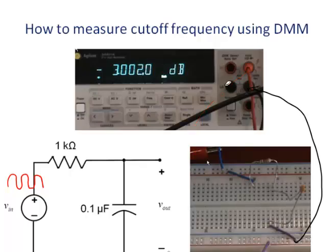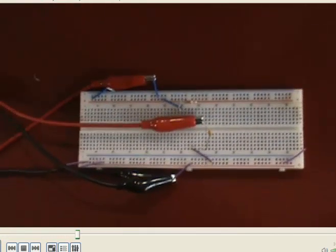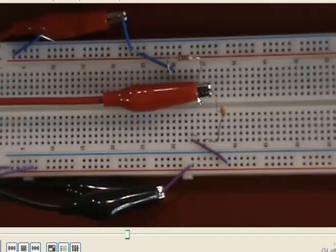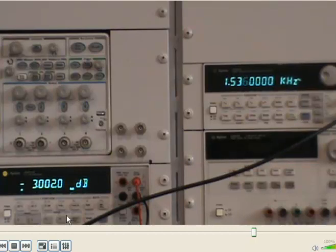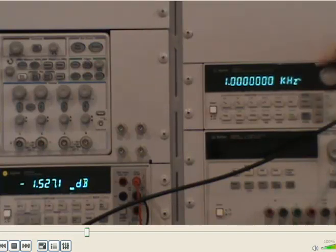Now we need to connect the input of the digital multimeter to the output voltage of the circuit, connecting the two leads across the capacitor — that's the output voltage. We switch the leads of the digital multimeter to be across the capacitor to measure the output voltage. Now we need to change the frequency of the power supply to make the gain of the circuit 3 decibels below the passband gain. Notice that this is a low-pass filter, so when the frequency goes up, the gain of the circuit goes down.